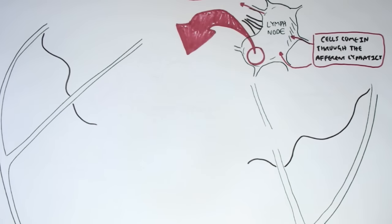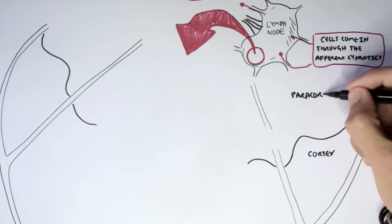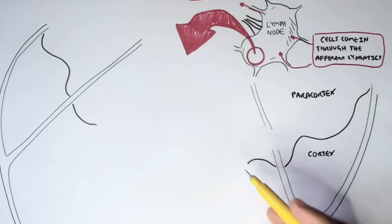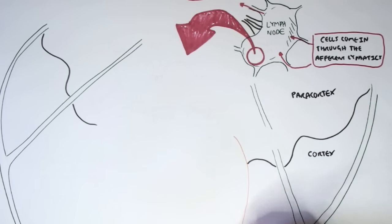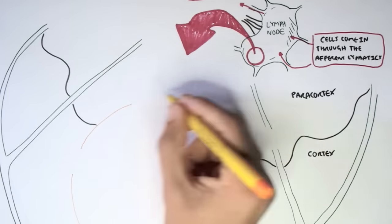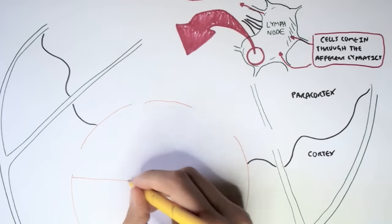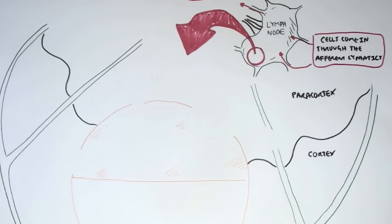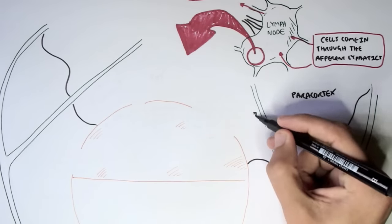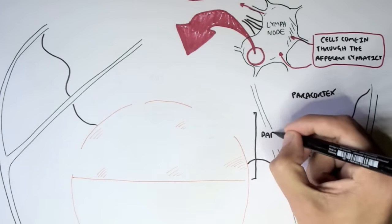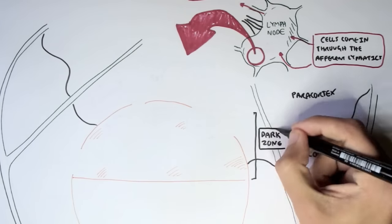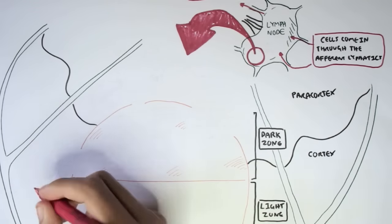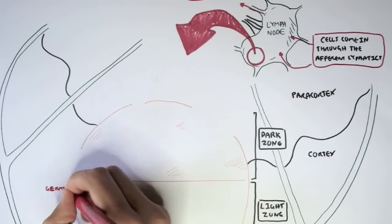In the lymph node, we have certain designated areas. The cortex, which is usually abundant in B cells, and the paracortex, usually abundant in T cells. Within the lymph node, we have areas called the germinal center, and the germinal center consists of a dark zone and a light zone.